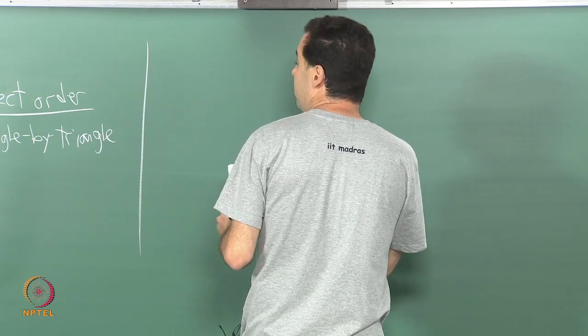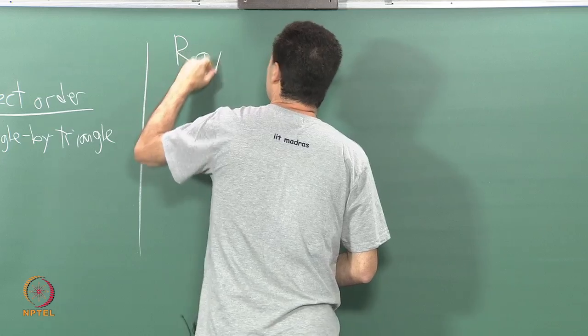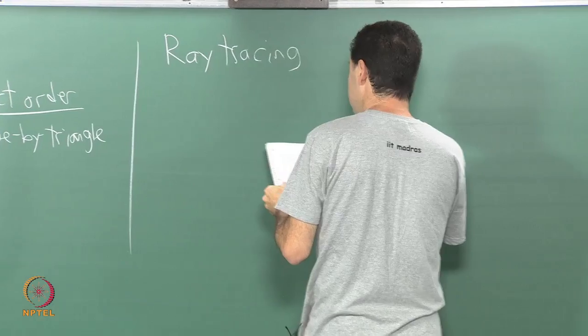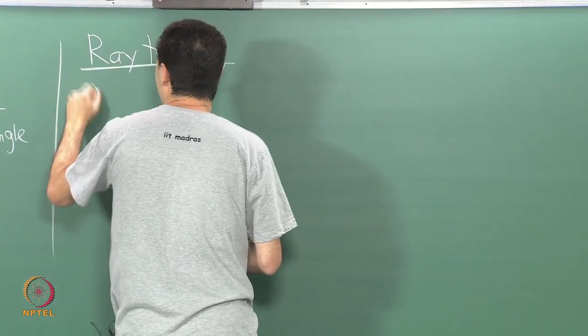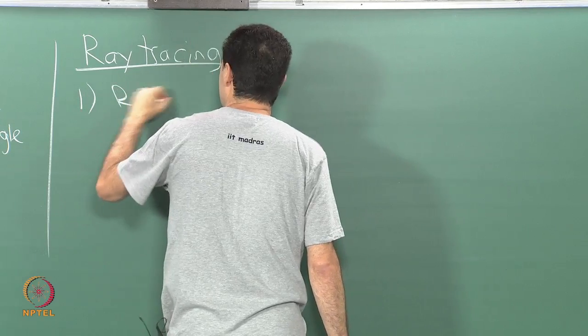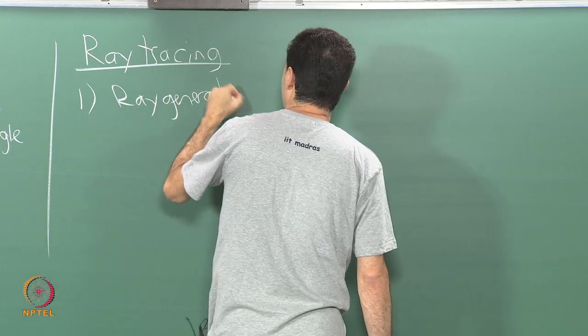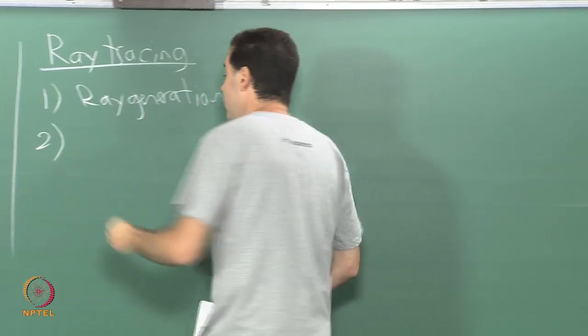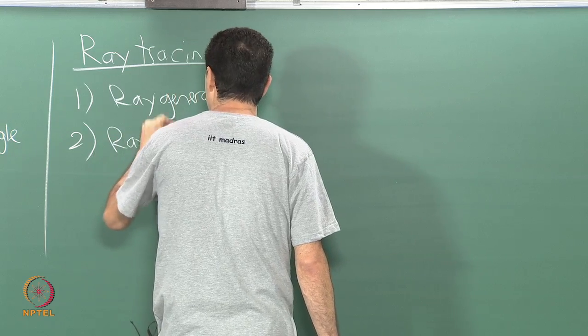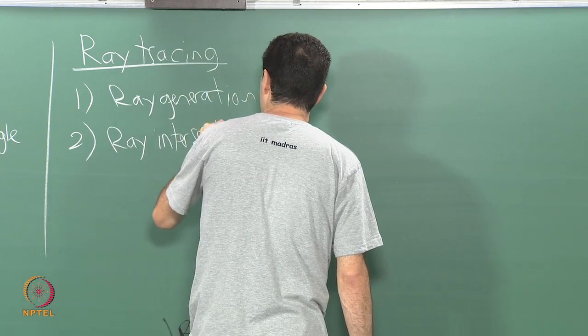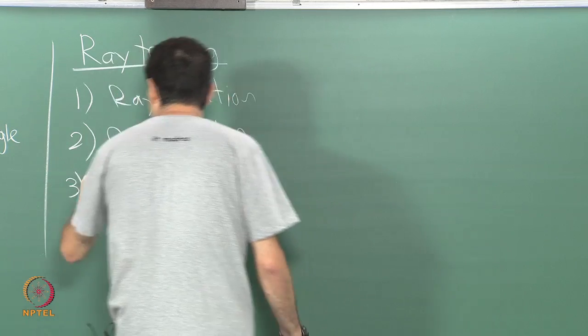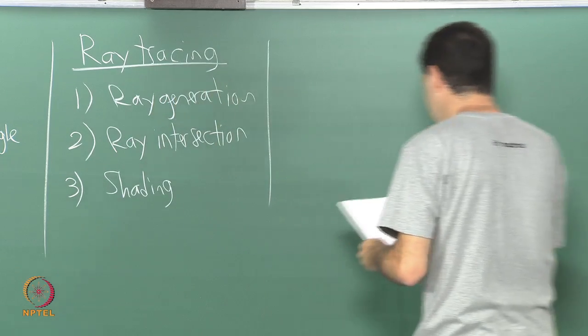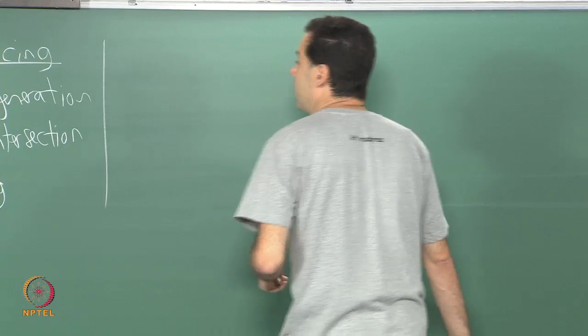Generally the most common method for image order rendering is referred to as ray tracing, which involves three stages. One: ray generation. Two: I will write them here quickly and then I will go into details on each of them: ray intersection. And three: shading.